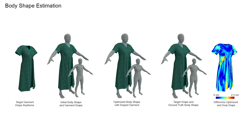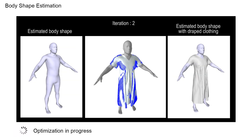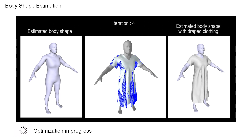Our method enables shape estimation of the underlying body shape simply by observing the outer clothing layer. We can obtain the required gradients through the collisions of the cloth with the body. We show different iteration results and demonstrate that our method quickly recovers the correct body shape.